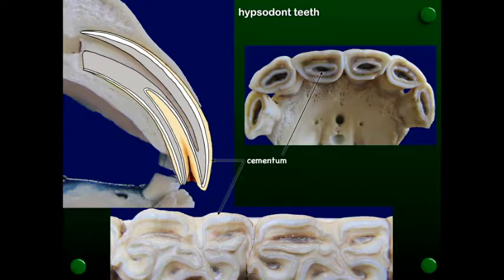So that cementum not only is out here in this surface out here, but it comes down into this infundibulum as well. So a horse's teeth initially are going to be a little bit yellowish, but then as that cementum wears down, we'll see the underlying enamel, so then they'll be shiny.